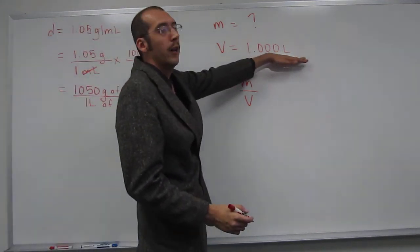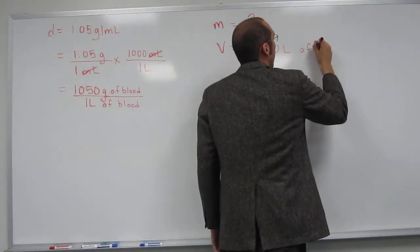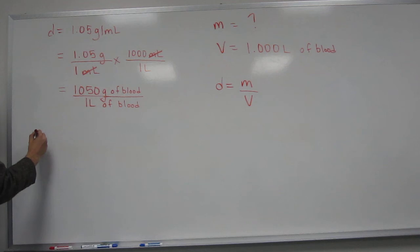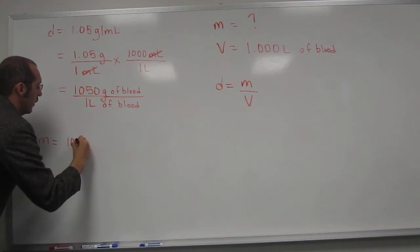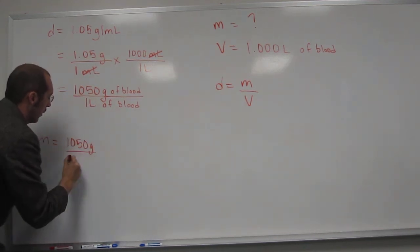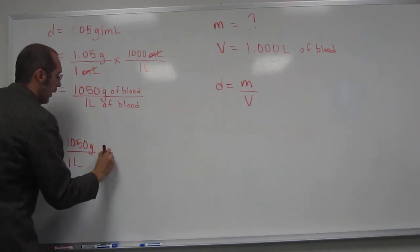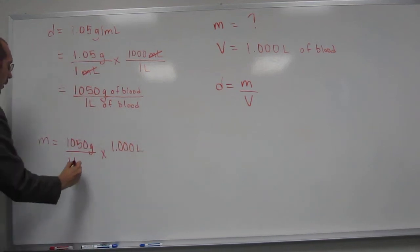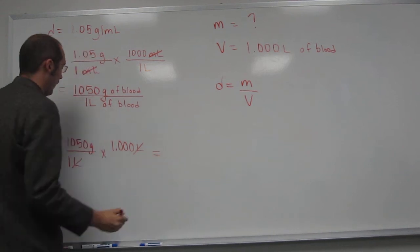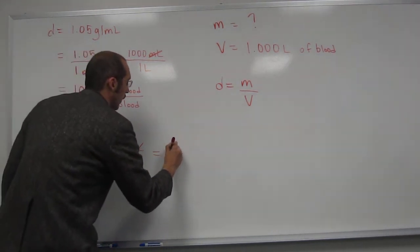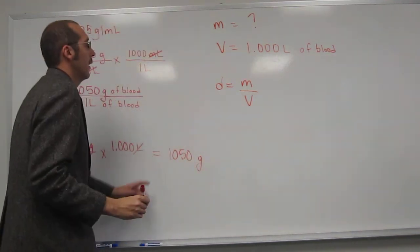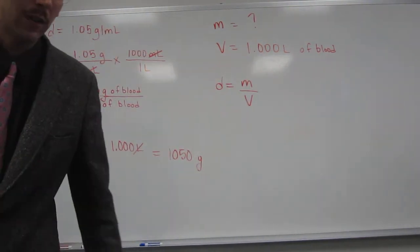So remember, this volume is 1.000 liters of blood. So let's figure out the mass. The mass, well, we know 1050 grams of blood per 1 liter of blood. And we're going to multiply that by 1.000 liters of blood. That'll cancel out our liters, and that'll give us that mass. And again, we did that in the step before. But if this volume was different than 1, we would have had to do this next step. So it's good to show.